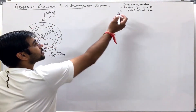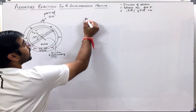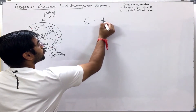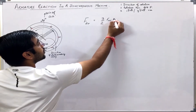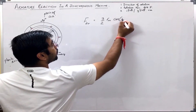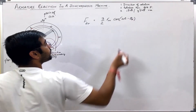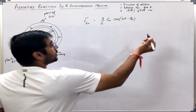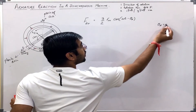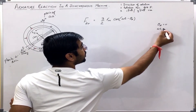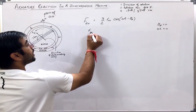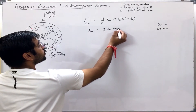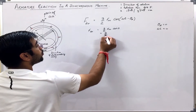First, we will see the direction of rotation. We got that the armature reaction MMF in the air gap came out to be (3/2) F_max cos(ωt − θ_d). Now, at θ_d = 0 and ωt = 0, the value of F_ar is equal to (3/2) F_m cos(0), that is (3/2) F_m.